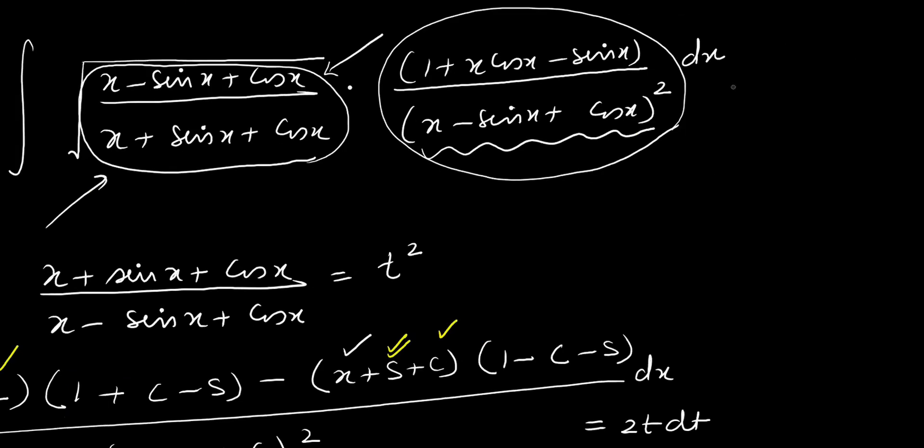Now you use the substitution. Your question will convert to the form integral root over 1 by t squared. So it will become 1 by t. After that, the remaining term is 2t dt. So 2, sorry, 2 will not get cancelled. t will get cancelled and answer will become 2t plus the constant of integration. What we are going to get is 2t plus the constant of integration.